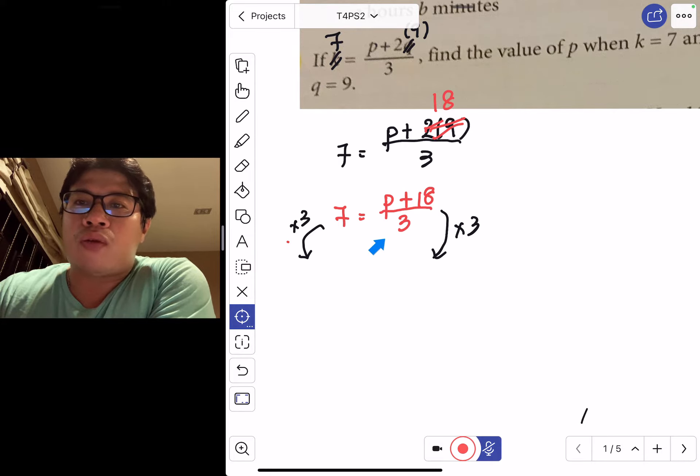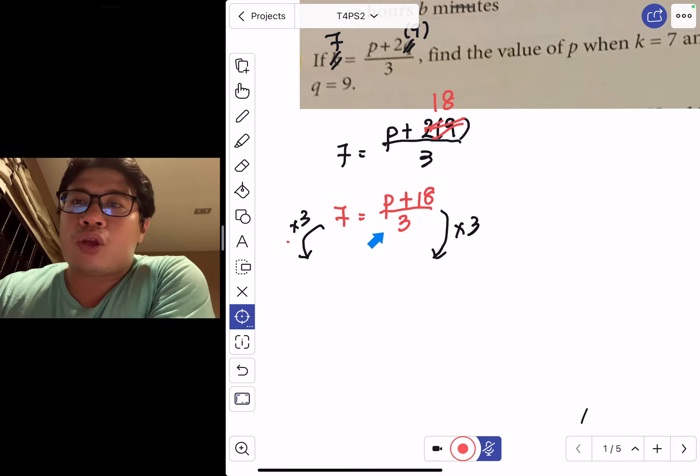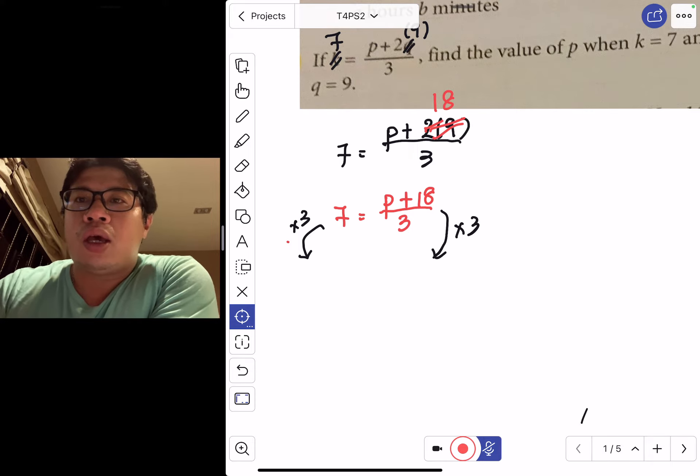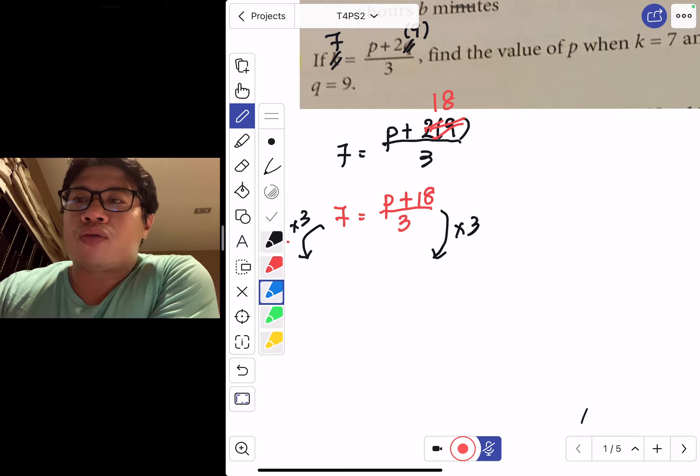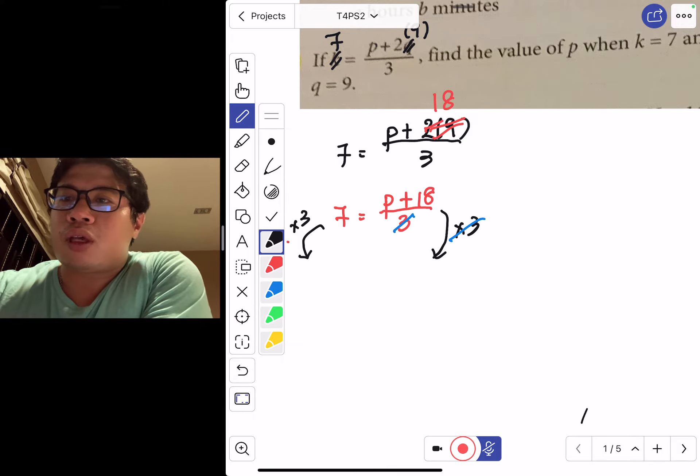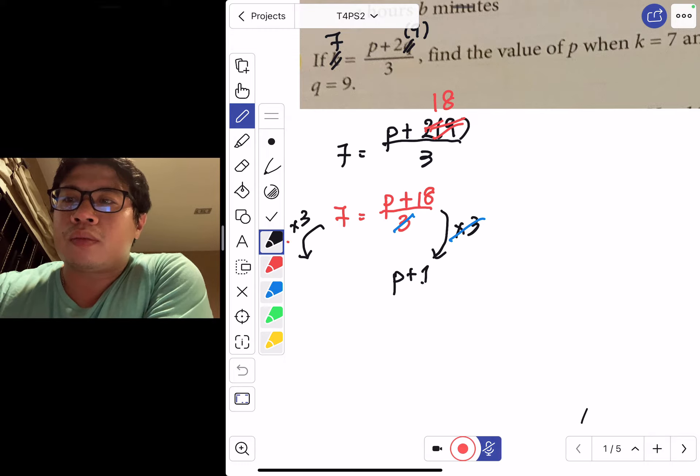If you want to get rid of minus 3, you add both sides by 3. You get rid of plus by minus, minus by plus, divide by times, times by divide. So this is a division of 3. 3 divided by 3 times 3 will cancel off. This will give me p plus 18 on the right hand side, and on the left hand side, 7 multiply by 3 gives me 21.